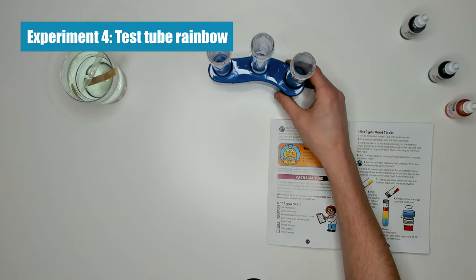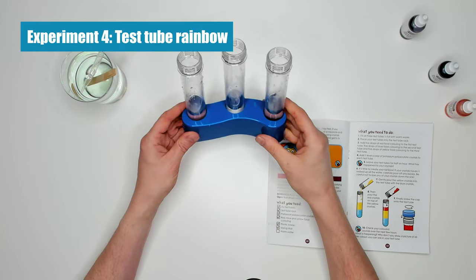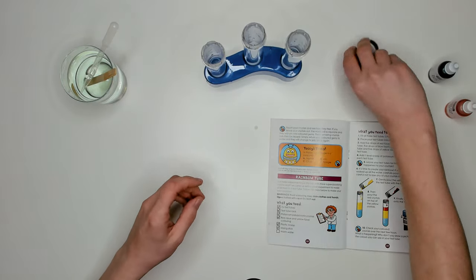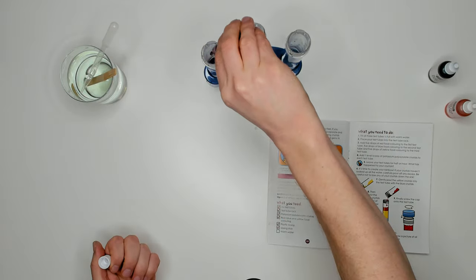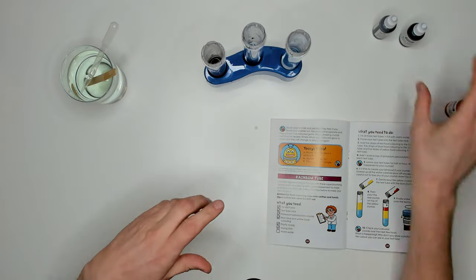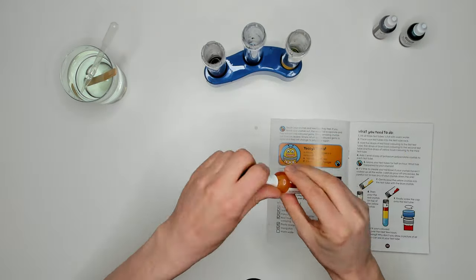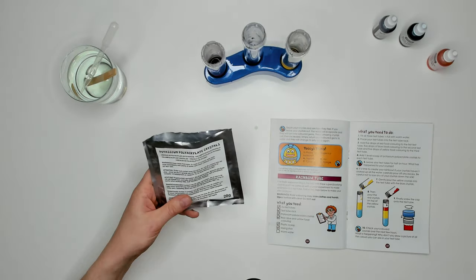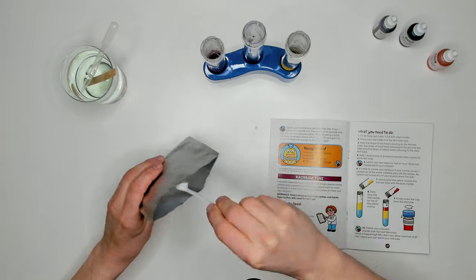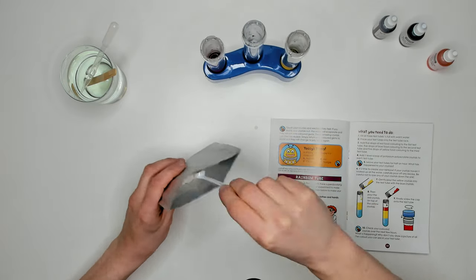Experiment four is to create a rainbow in a test tube which sounds pretty cool. To start I've pre-filled these test tubes one quarter full with warm water. Then I'm going to add five drops of color to each of the test tubes to make red, blue and yellow liquids. Then I'm taking the polyacrylate crystals and adding one scoop to each test tube. Next we leave the crystals in the tubes for 30 minutes.